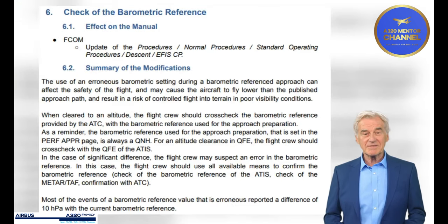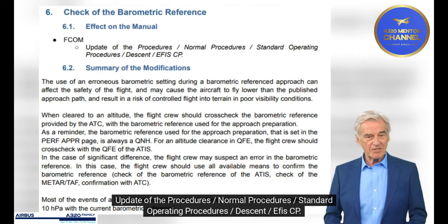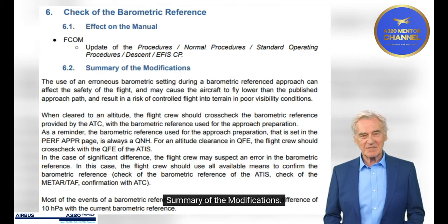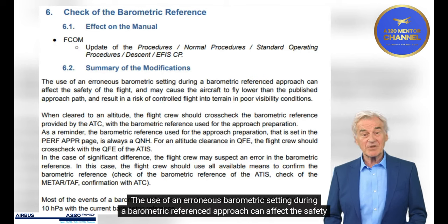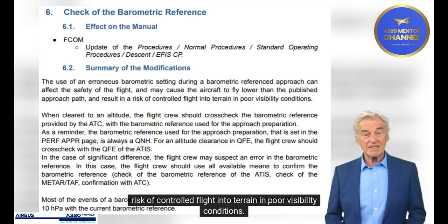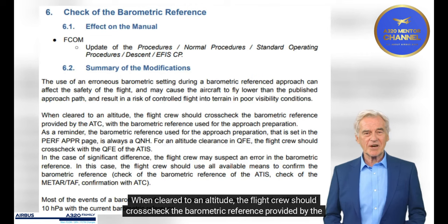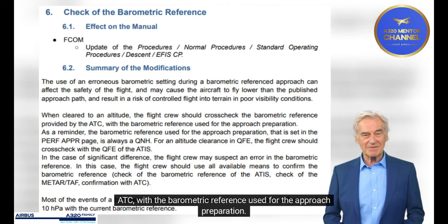Check of the Barometric Reference. Effect on the Manual FCOM. Update of the Procedures: Normal Procedures, SOP, Descent, EFIS CP. Summary of the Modifications: The use of an erroneous barometric setting during a barometric referenced approach can affect the safety of the flight and may cause the aircraft to fly lower than the published approach path, resulting in a risk of controlled flight into terrain in poor visibility conditions. When cleared to an altitude, the flight crew should cross-check the barometric reference provided by the ATC with the barometric reference used for the approach preparation.